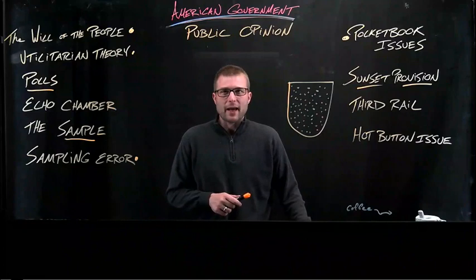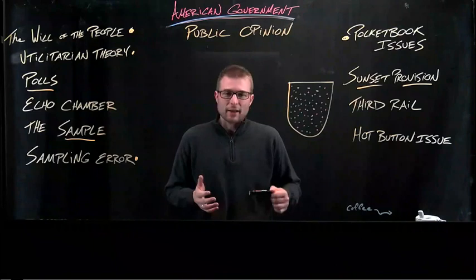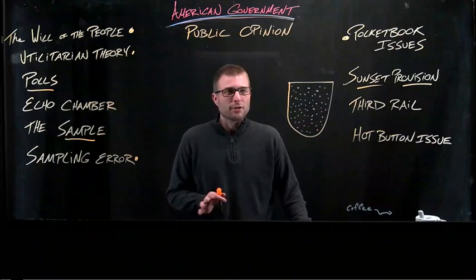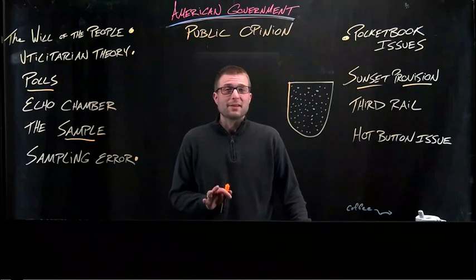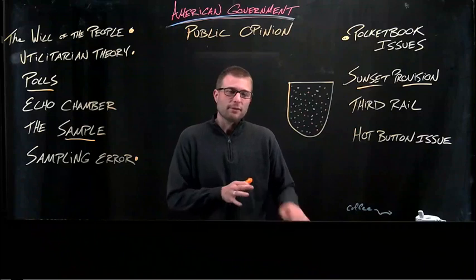So where does public opinion fit into this picture? What part has it played in what's happened since the 1990s? Let's look first to the direction of public opinion, where Americans actually stand on gun control. Americans are split on the issue. A larger number of Americans generally, and sometimes twice as many, have told pollsters that they wanted stricter controls on gun purchases instead of fewer.